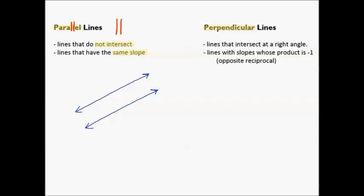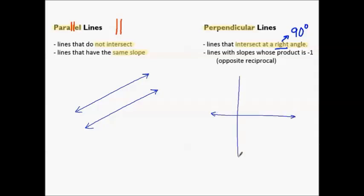Perpendicular lines are lines that intersect at a right angle. Remember that a right angle measures 90 degrees. The picture of perpendicular lines would be: here is one line, and here is a line crossing that first line at a 90 degree angle.